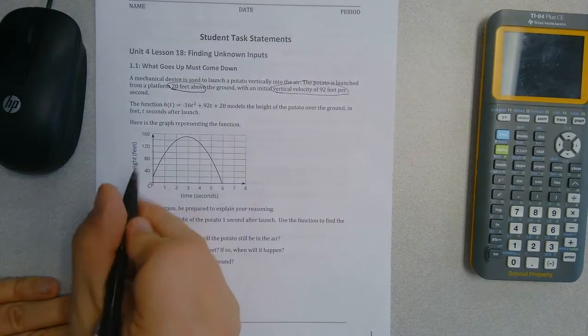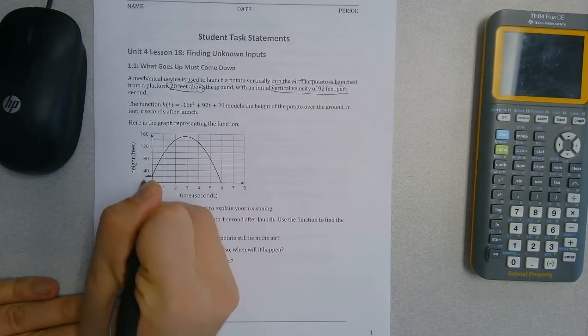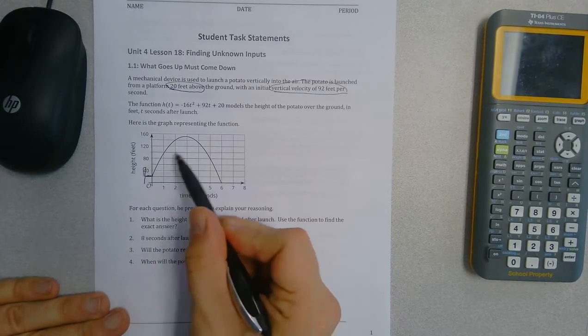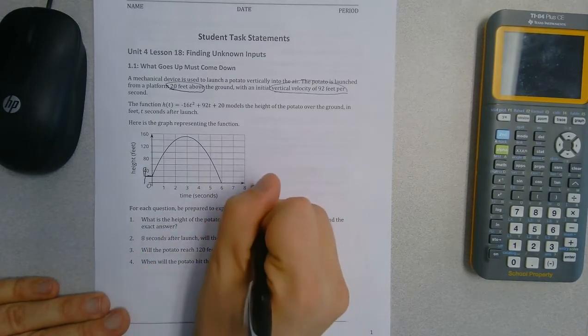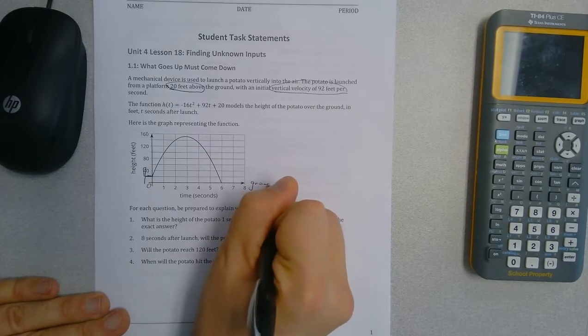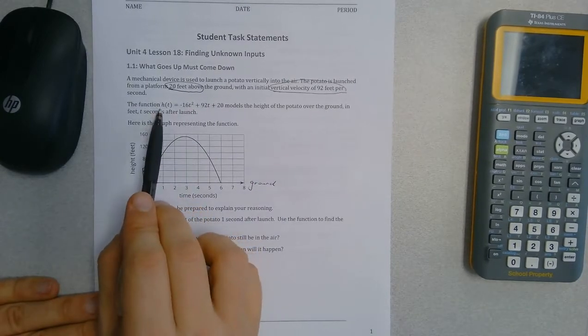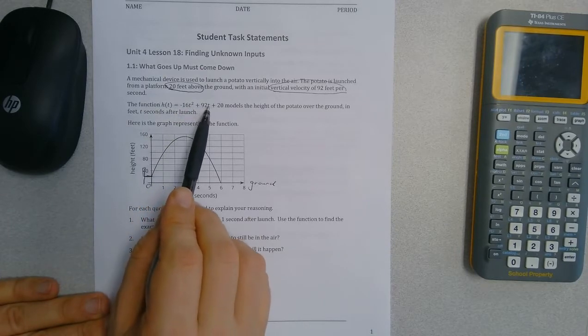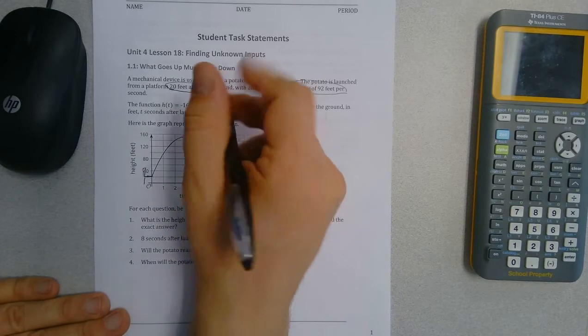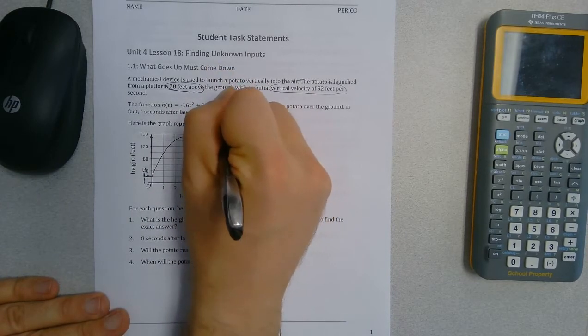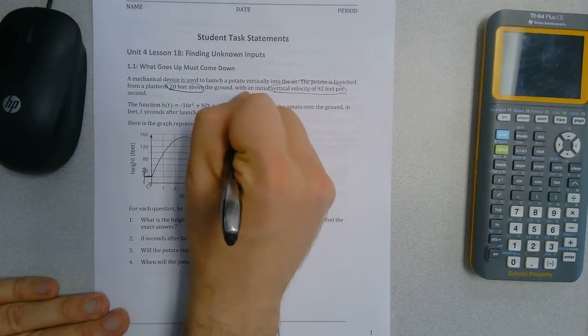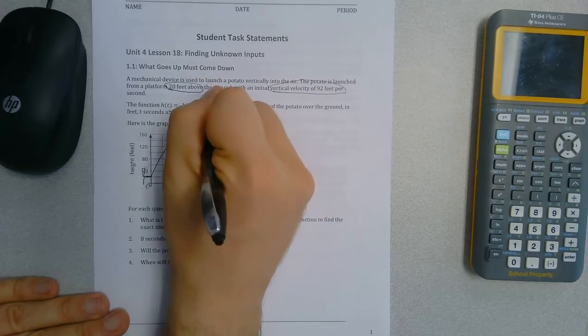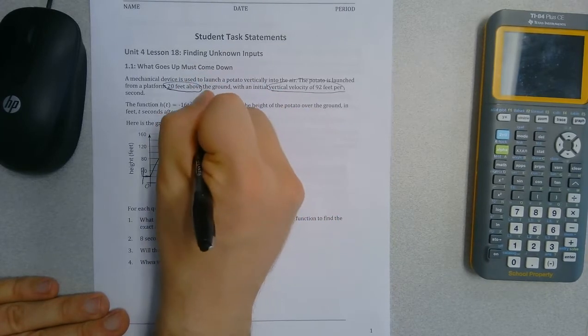If I'm looking at a picture of this, here is my launcher for the potato. And then there's this path to right here, which is the ground. So the function h(t) is negative 16t squared plus 92t plus 20. Again, this is our initial height. This is our initial velocity.